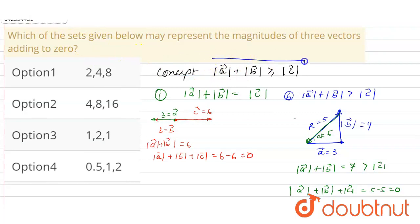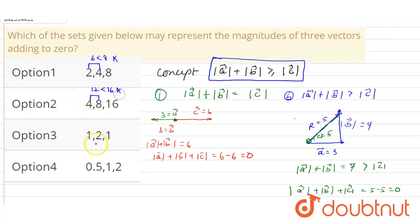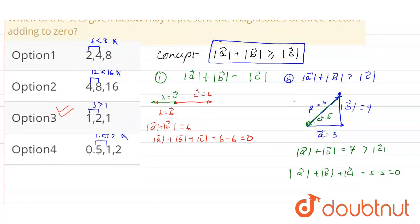So the condition required is: the sum of the magnitudes of any two vectors must be greater than or equal to the third. Checking the options: option 1 — 2 + 4 = 6, less than 8, not satisfied. Option 2 — 4 + 8 = 12, less than 16, not satisfied. Option 3 — 2 + 1 = 3, greater than 1, satisfied. Option 4 — 0.5 + 1 = 1.5, less than 2, not satisfied. So the correct option is number 3.